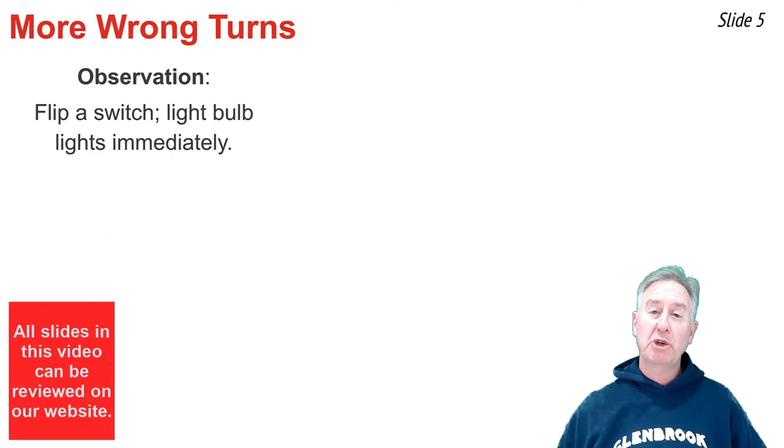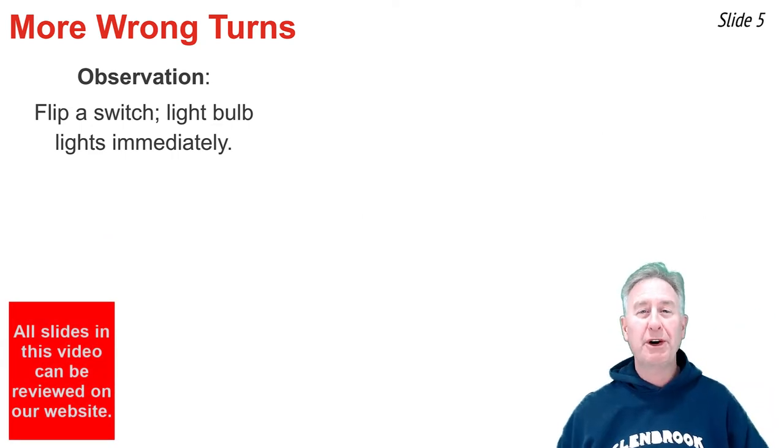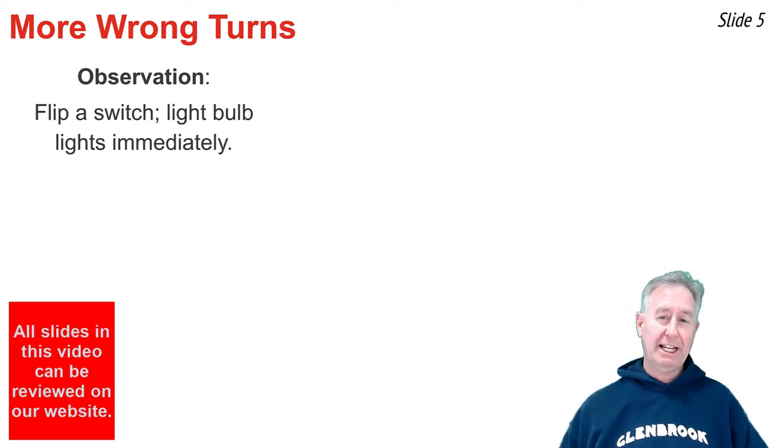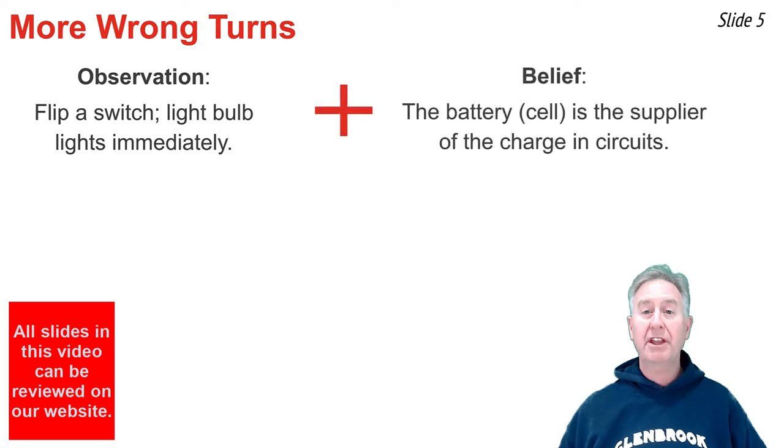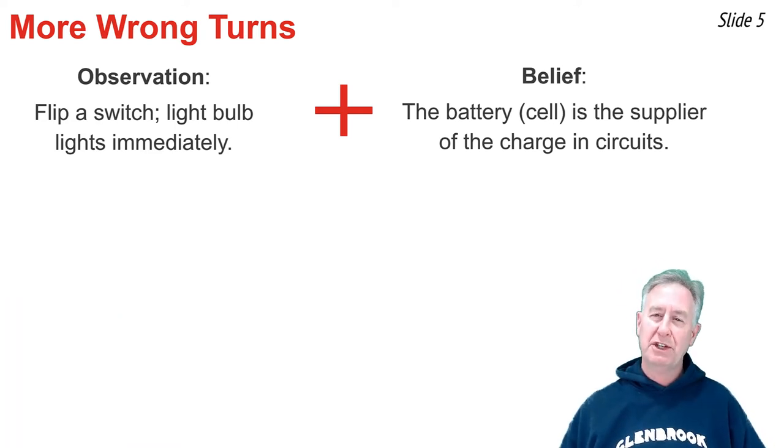I'm sure we've all observed this. You flip the switch on the wall, and the light bulb lights immediately. There's no perceptible time delay between the flipping of the switch and the lighting of the bulb. And if we combine this observation with the belief that the battery or the cell is the source of charge in an electric circuit, it leads to two more wrong turns that can be very harmful in your ability to understand circuits.